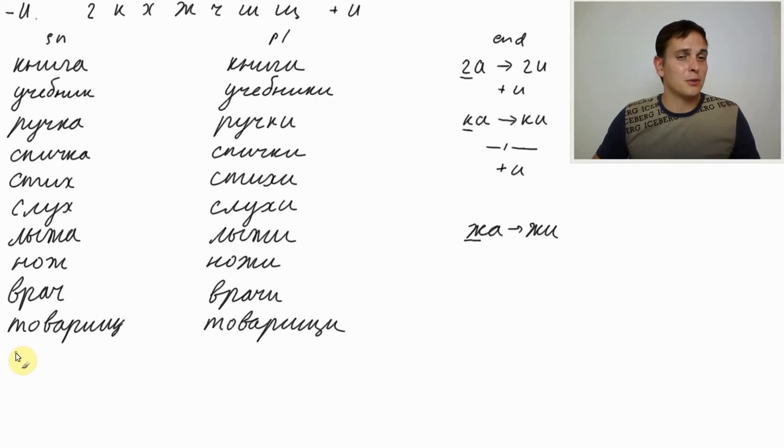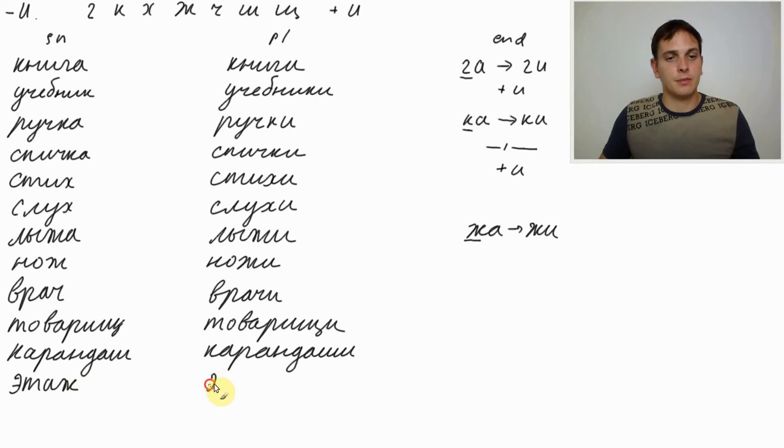And we still got place for three more examples. Let's take карандаш. Карандаш is pencil. Карандаши. Try to build a plural. Карандаши. Этаж. Этаж is floor. And the plural этажи. And ПЛАЩ. ПЛАЩ is raincoat. ПЛАЩИ. Plural of ПЛАЩ is ПЛАЩИ. So let's repeat these words.